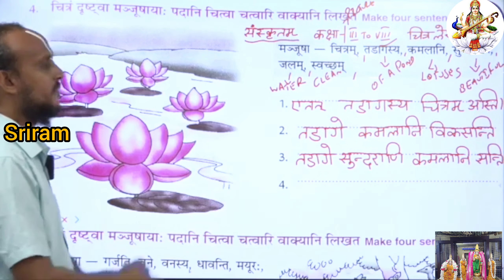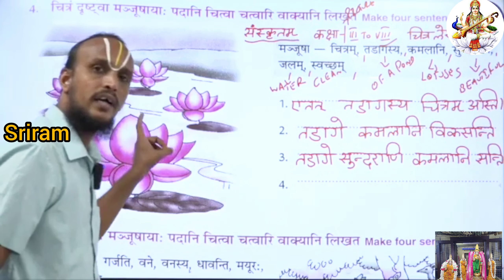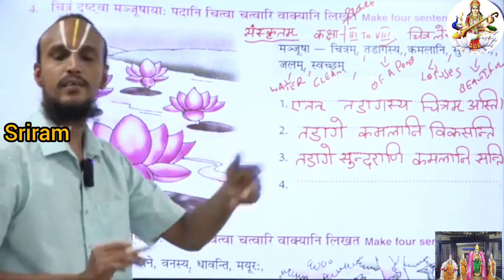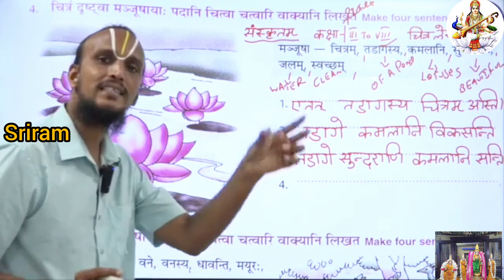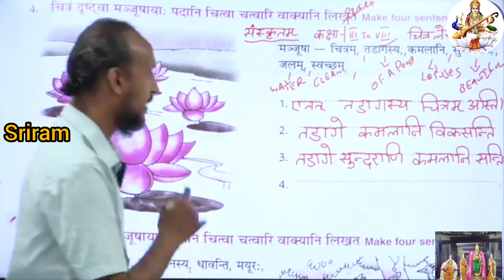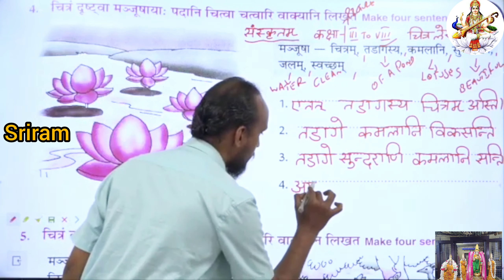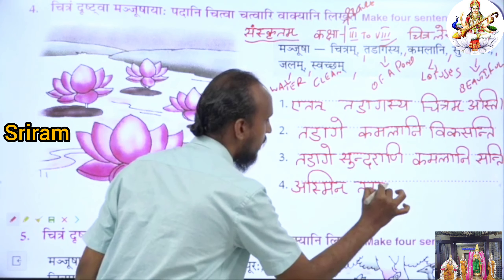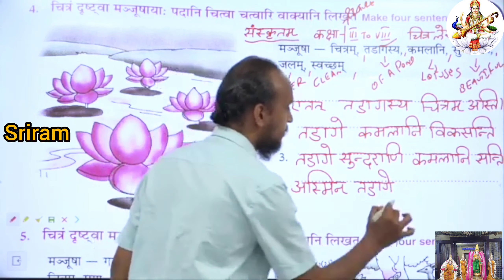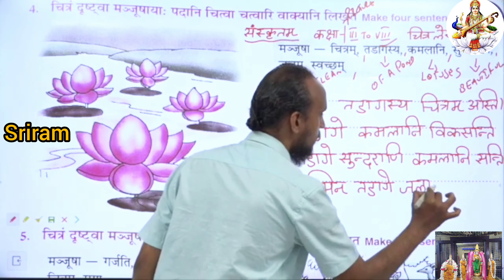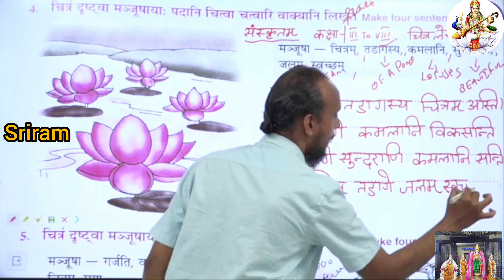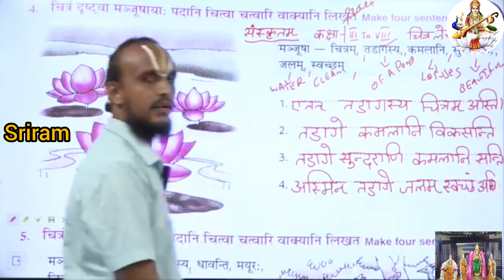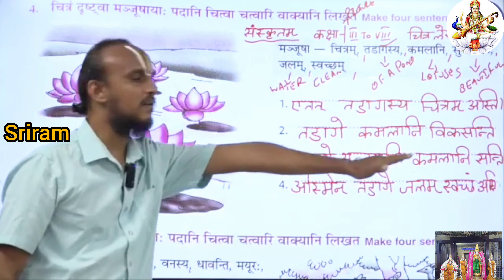Then the last one — how can you write: 'Clean water is there in this pond'? The sentence is: 'Asmin tadage jalam swacham asti.' Listen: 'Asmin tadage jalam swacham,' then end with the verb 'asti.' So the full sentence is: 'Asmin tadage jalam swacham asti.'